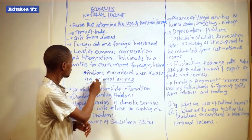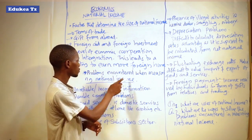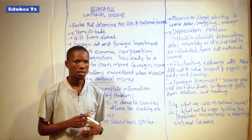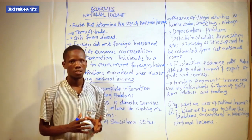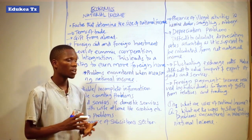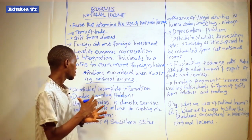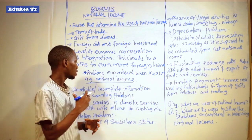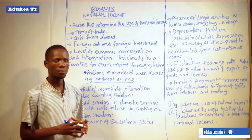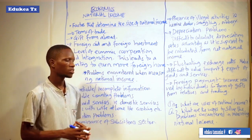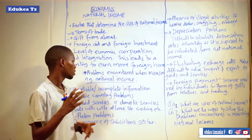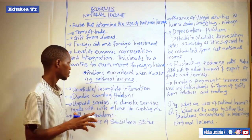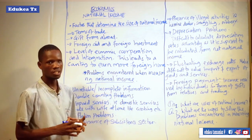Let us now look at the problems encountered when measuring national income. These are the obstacles, limitations, or things that make the process of enumerating national income difficult — the things that lead to failure in making the measurement of national income accurate.